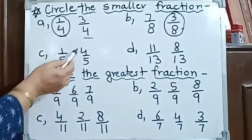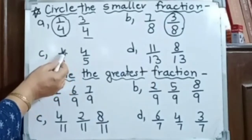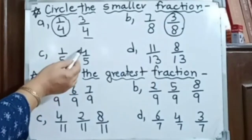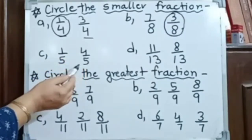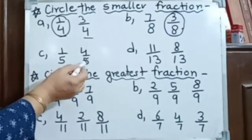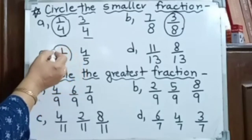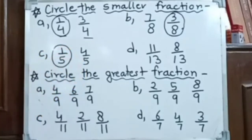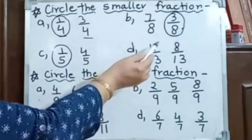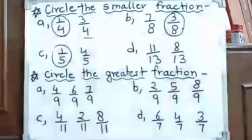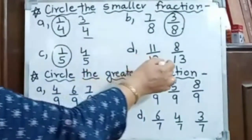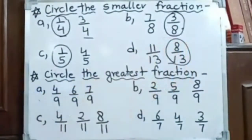Here we have 1 by 5 and 4 by 5. 1 is the numerator, 5 is the denominator. Here 4 is the numerator, 5 is the denominator. When denominators are the same, then the smaller numerator is the smaller fraction. Here 11 and 8 are both numerators, 13 and 13 are both denominators. So 8 upon 13 is the smaller fraction.